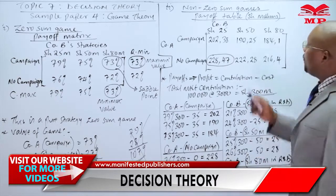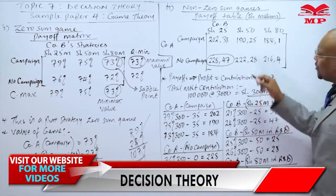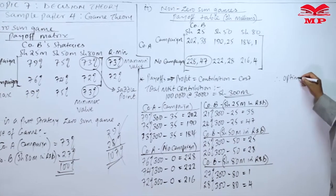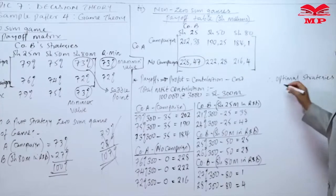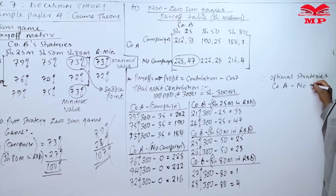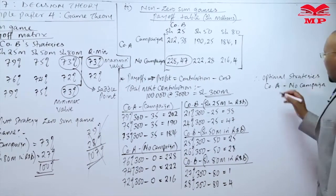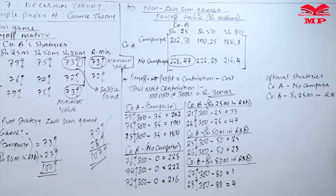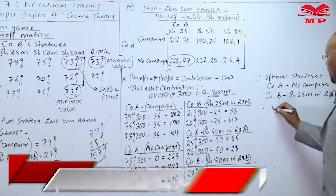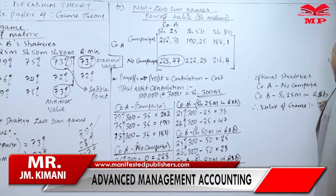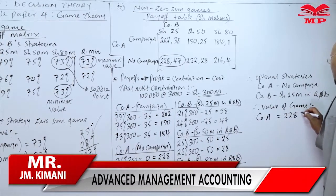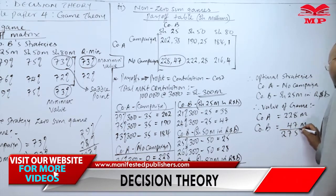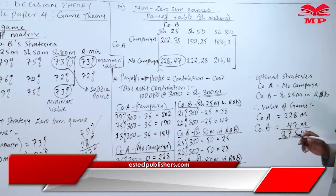The only pair favorable for all players is where Company A earns 228 million — the best for Company A — and Company B earns 47 million — the best for Company B. Therefore, the optimal strategies are: Company A will have no campaign, and Company B will invest 25 million in R&D. The value of the game is Company A earning 228 million plus Company B earning 47 million, totaling 275 million — the highest combined value.